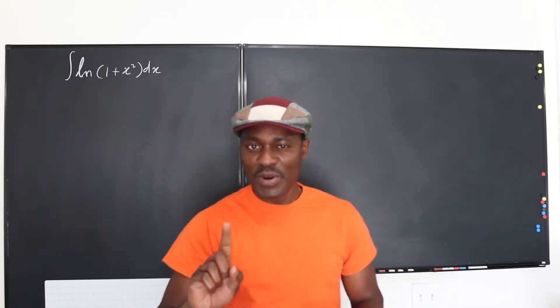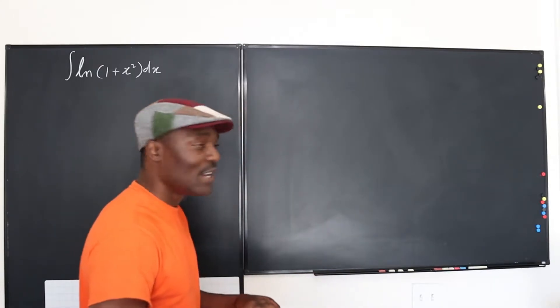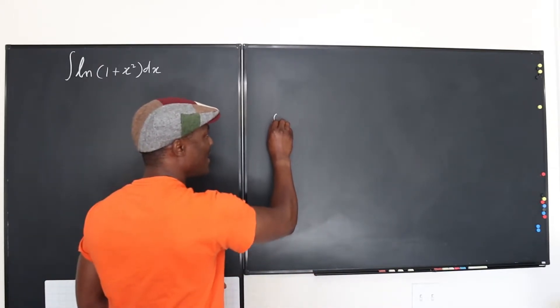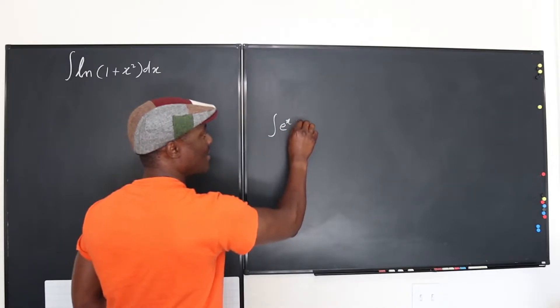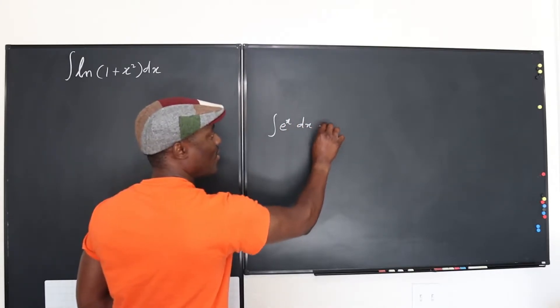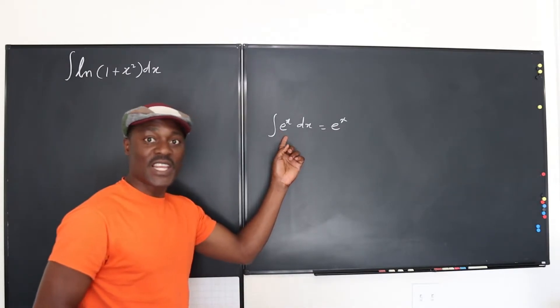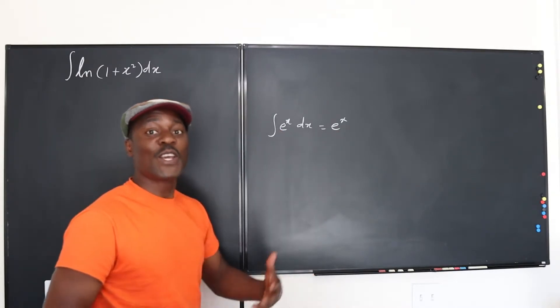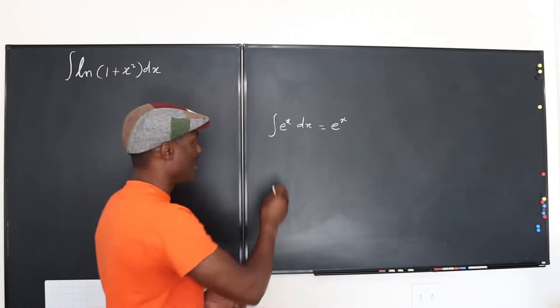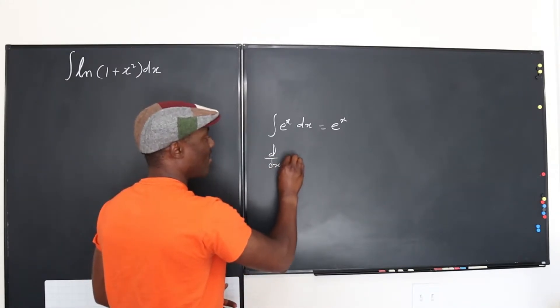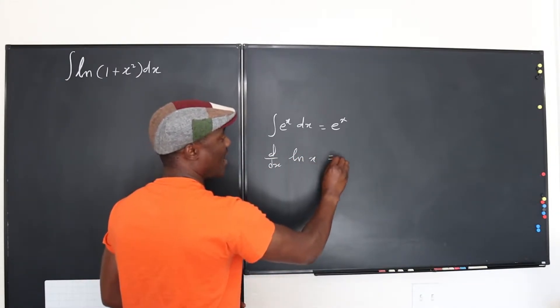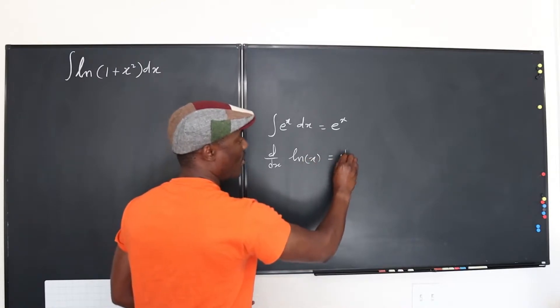And so you remember this in case you did not know this, that you can easily integrate e to the x dx. Your answer is e to the x. And you can easily differentiate e to the x. It will be the same thing. You can also differentiate ln of x. So we can take d dx of ln of x, and our answer is going to be 1 over x.